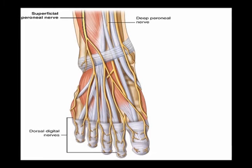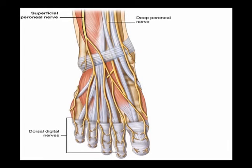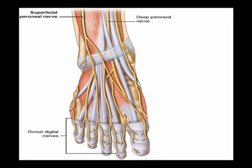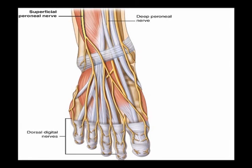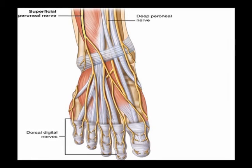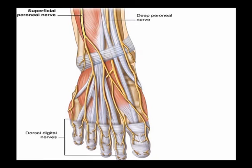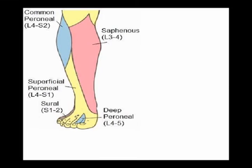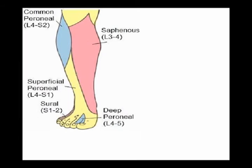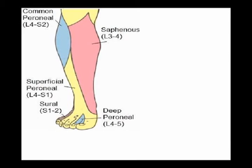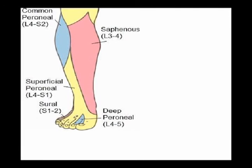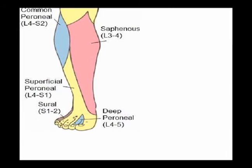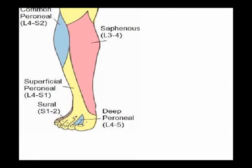As the superficial peroneal nerve travels inferiorly in the foot, it divides into two branches: the medial and intermediate dorsal cutaneous nerves. The remaining portion of the superficial peroneal nerve in the foot is purely sensory, supplying sensory innervation to the dorsal aspect of the foot except for the first dorsal web space.